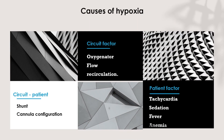Now we will summarize the causes of hypoxia on ECMO. These include: circuit-patient interaction, presence of shunt, cannula configuration. If the problem is in the circuit itself, the issue will be with the oxygenator, ECMO blood flow, or presence of recirculation. Patient factors include tachycardia, sedation, fever, and anemia.